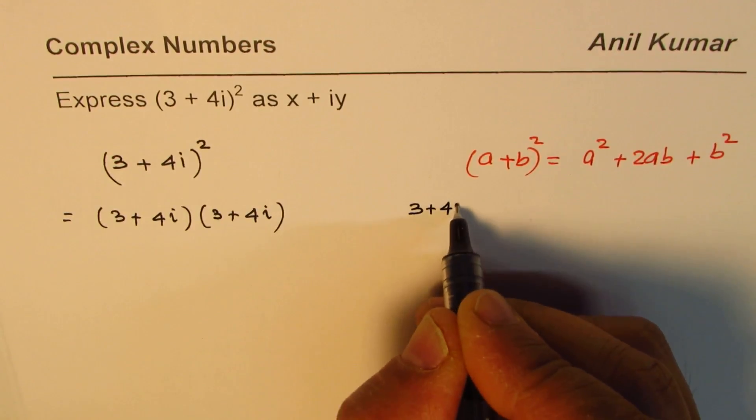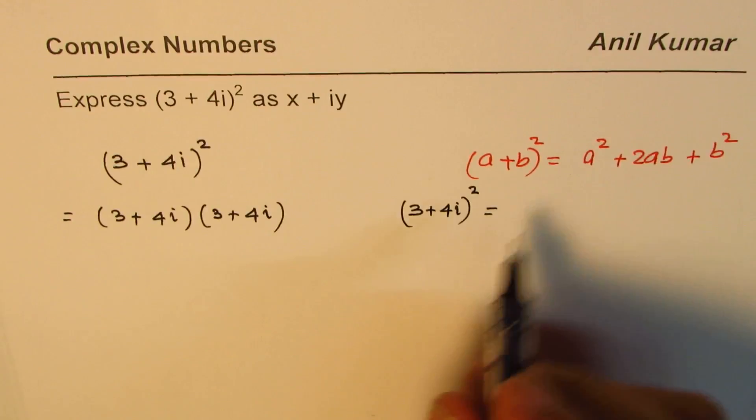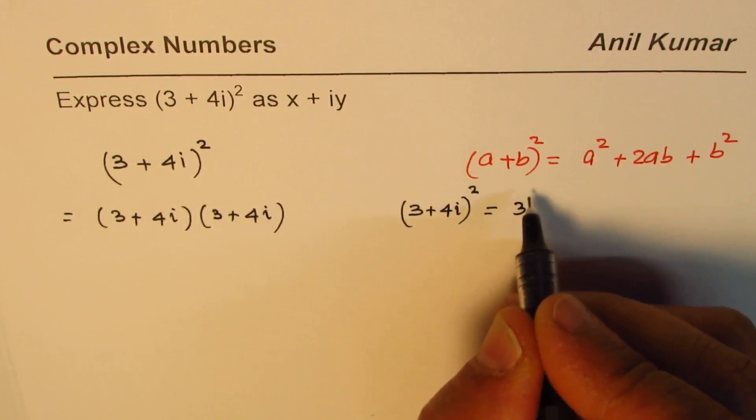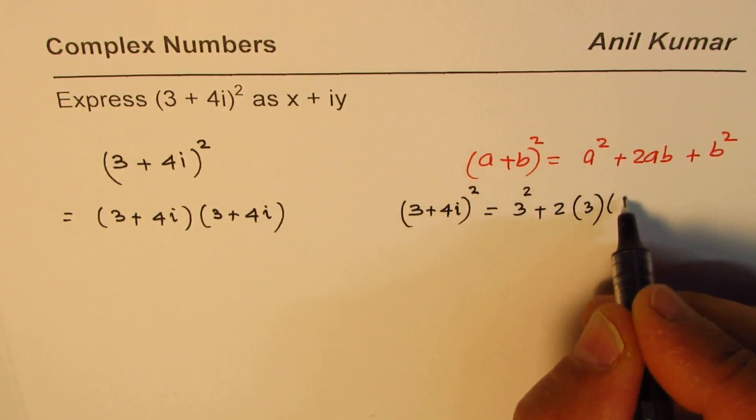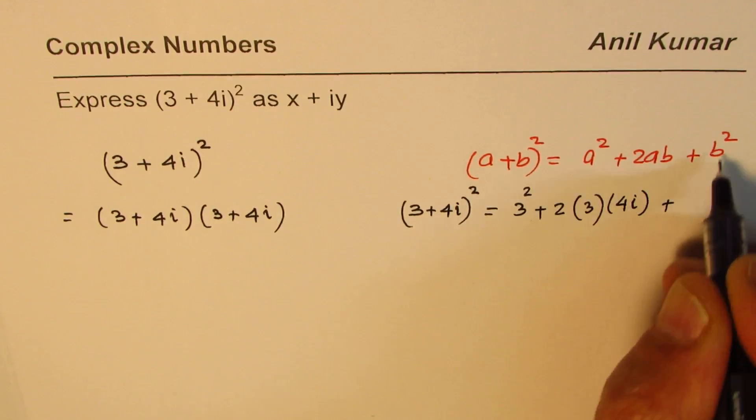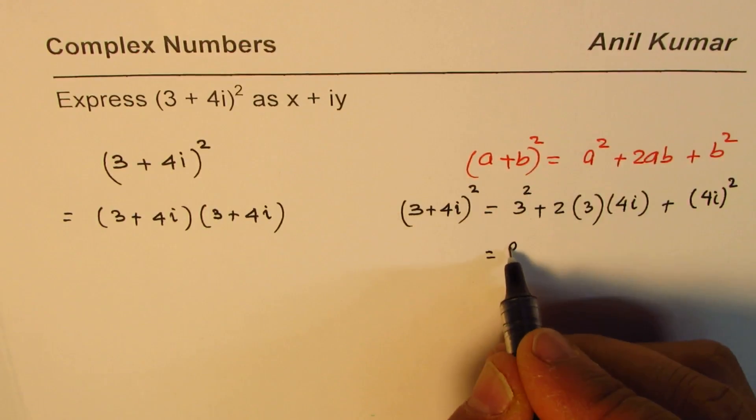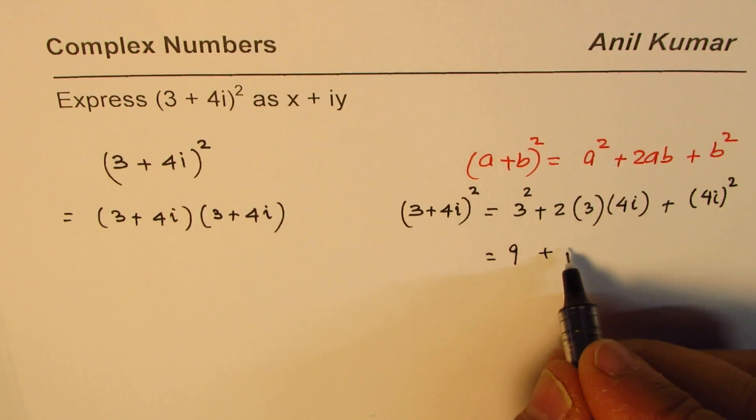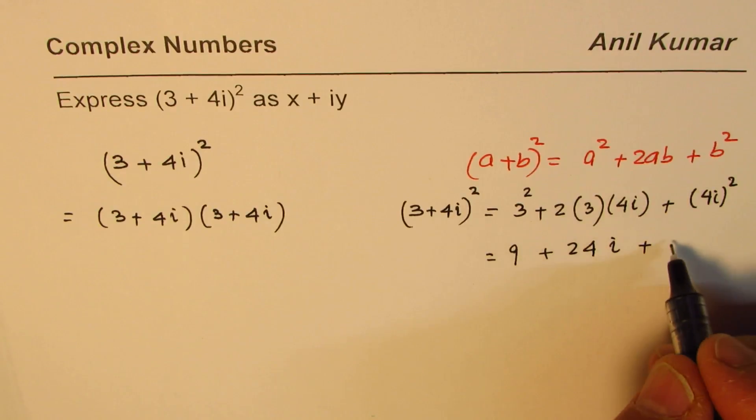So 3 plus 4i whole square equals, we'll expand using the formula. a is 3, b is 4i for us. So 3 square plus 2 times a is 3, b is 4i, plus b square which is 4i square. That gives us 3 square is 9, then 2 times 3 is 6, 6 times 4 is 24i. And square of 4 is 16.